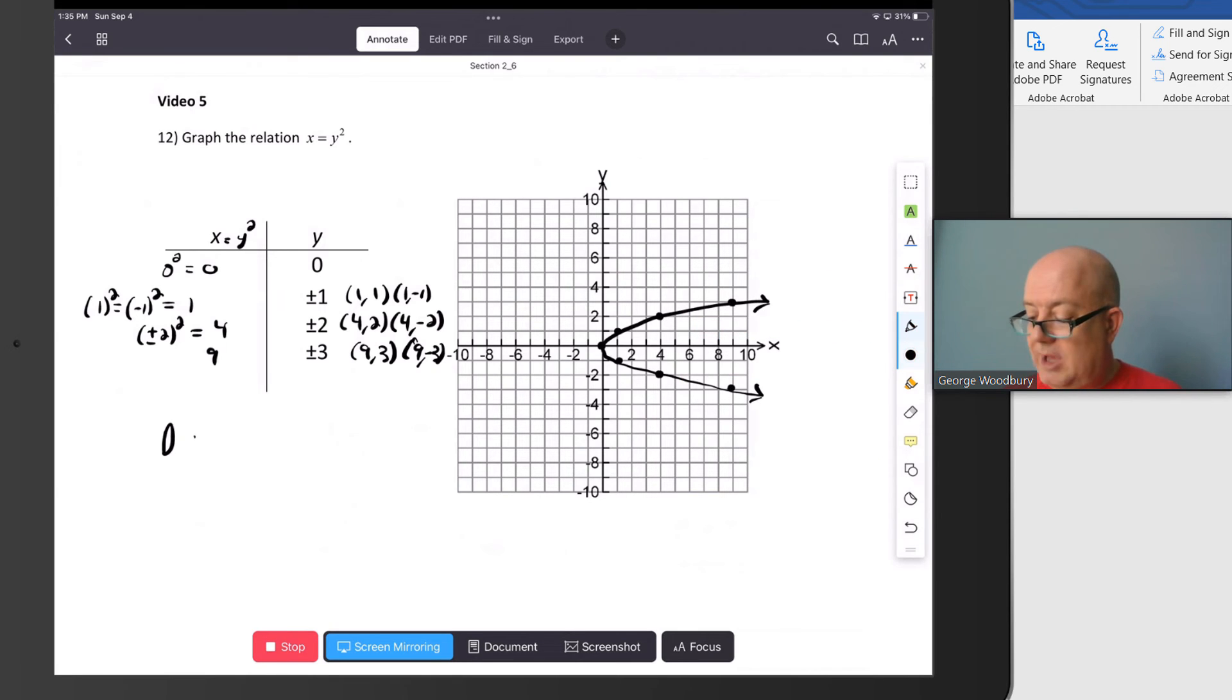In terms of domain for this relation, it goes to the left, it goes to 0, but it goes on forever to the right. So that's square bracket 0, comma infinity. But the range is the set of all real numbers because we have an arrow heading upward, slowly to the right, but upward, and we have an arrow moving downward to the right as well.